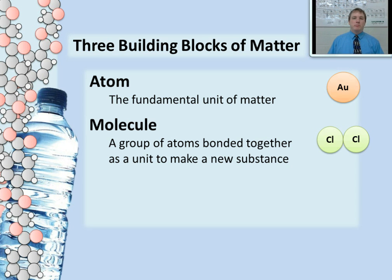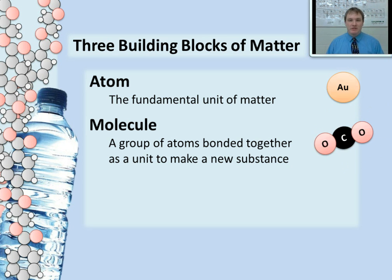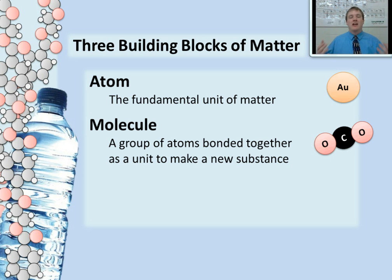Some molecules are really simple, like this chlorine molecule — it's just two atoms bonded together, and those atoms are the same type of atom. Sometimes they get a little more complicated. Here's a sulfur molecule with eight different overlapping atoms bonded together, but it's still made out of the same type of atom. Sometimes, though, we have molecules made of different types of atoms. This is a carbon dioxide molecule made up of one carbon bonded to two oxygens — different atoms bonded together to make a single unit of a substance with its own characteristic properties: carbon dioxide gas.